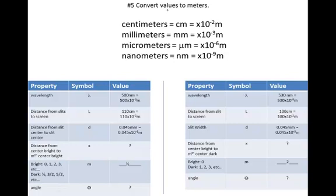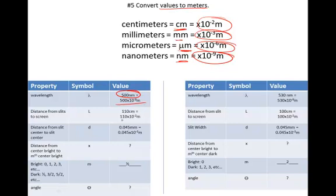Now we convert our values to meters. Centimeters become times 10 to the minus 2, millimeters become 10 to the minus 3, micrometers 10 to the minus 6, and nanometers 10 to the minus 9. So 500 nanometers is 500×10⁻⁹, 110 centimeters is 110×10⁻², and 0.045 millimeters is 0.045×10⁻³. For Example B, L is 100×10⁻² meters and the wavelength is 530×10⁻⁹ meters.